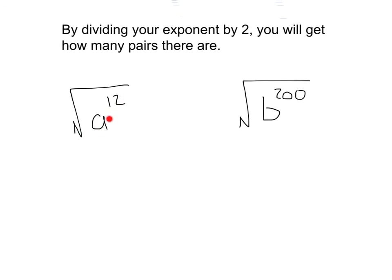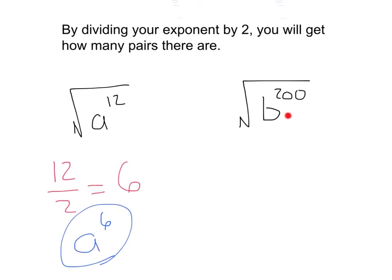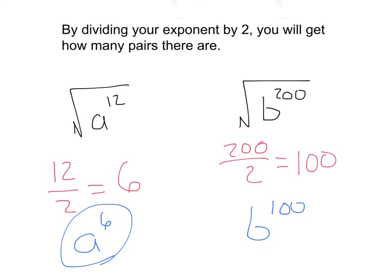Applying that rule here: we have square root of a to the twelfth. Instead of drawing twelve a's and circling pairs, I know that twelve divided by two equals six, so my answer is going to be a to the sixth power. Over here, square root of b to the two hundredth — instead of drawing two hundred b's, I can just do two hundred divided by two, which gives me one hundred, and my answer is b to the one hundredth power.